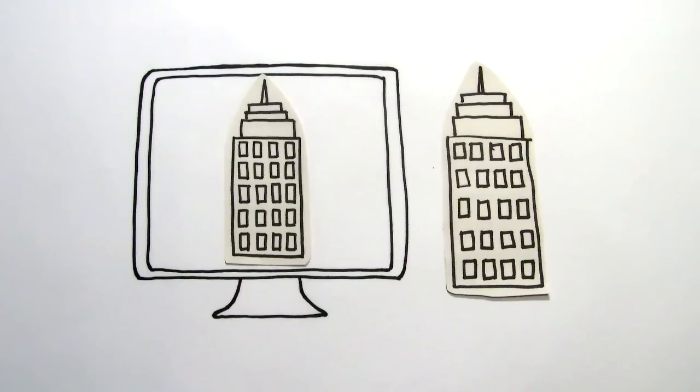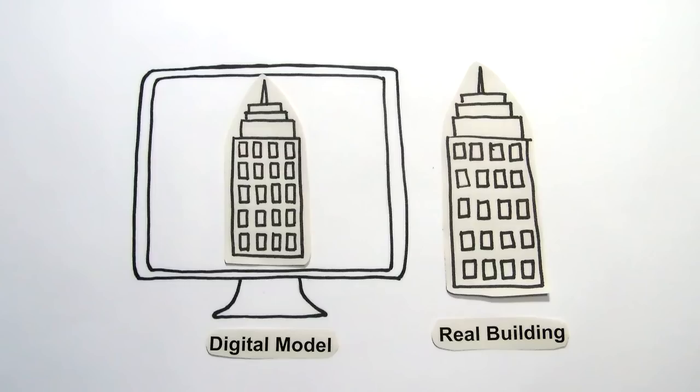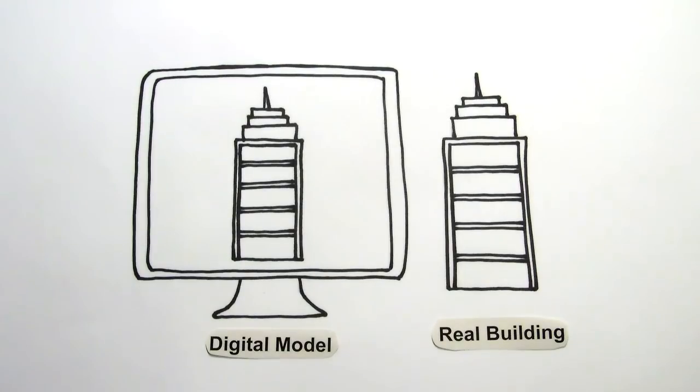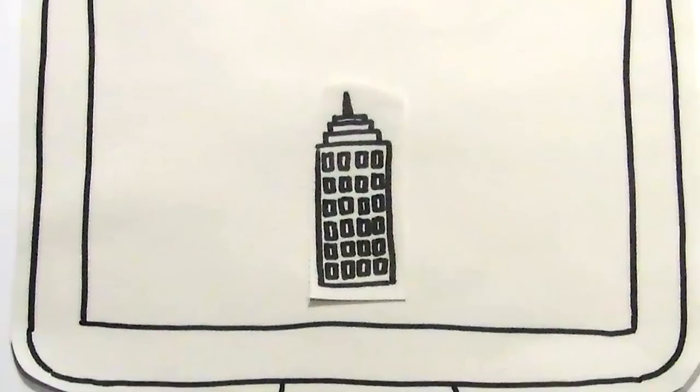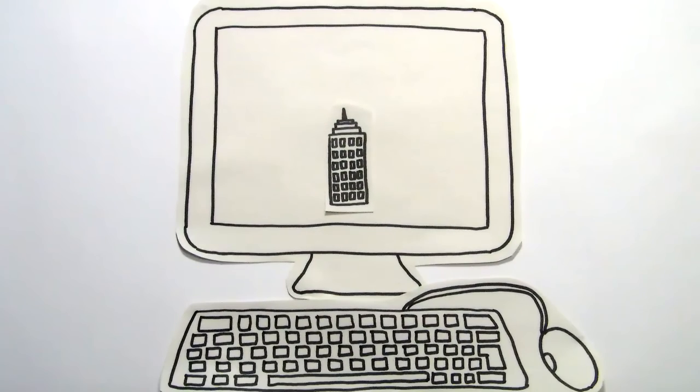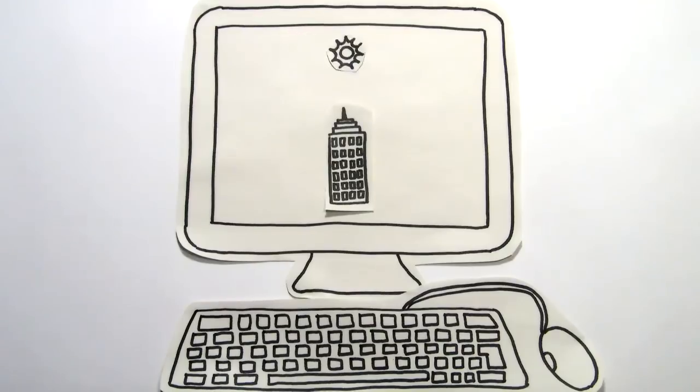A true BIM model consists of the virtual equivalence of the actual building sections used to create a building. These intelligent elements are the digital prototype of the physical building elements such as walls, columns, windows, doors, stairs, etc. that allow us to simulate the building and understand its behavior before the actual construction begins.